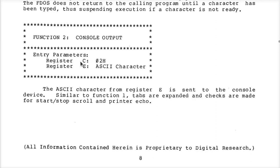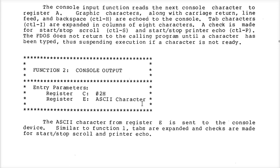We put a 2 into the C register, and we put the character we want to print into the E register. It says: character in E will be sent to the console. Similar to function 1, tabs will be expanded, and checks will be made for start/stop scroll, printer echo, and that sort of thing.